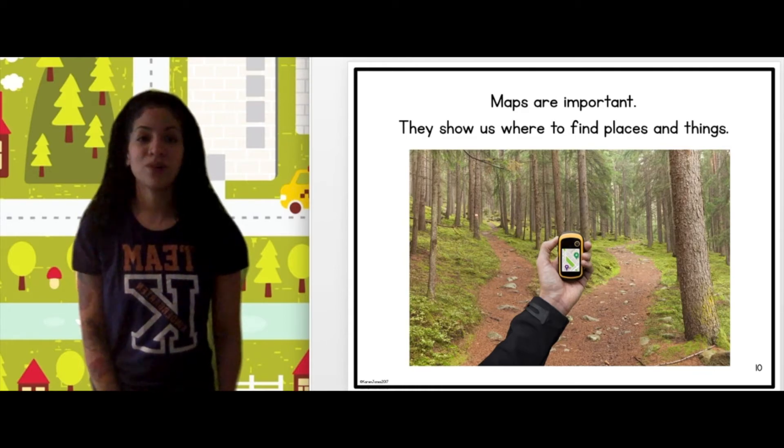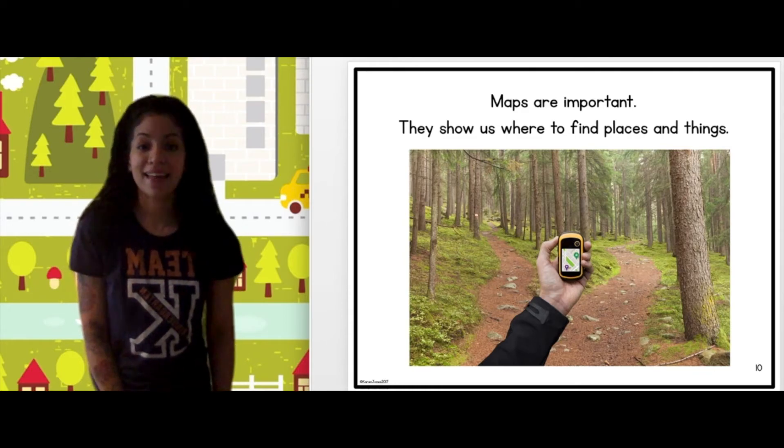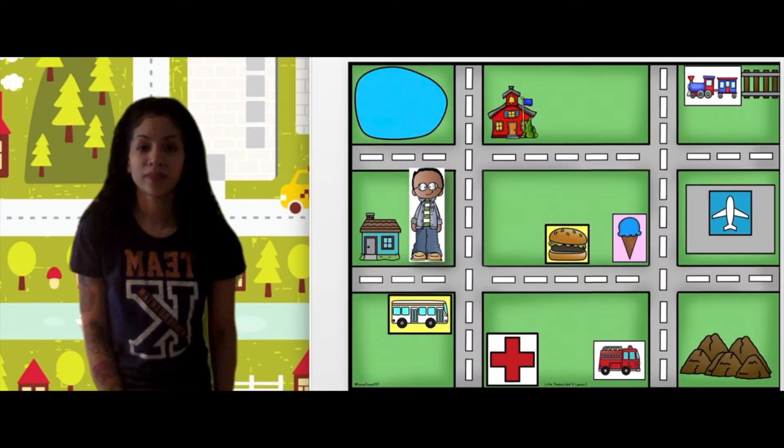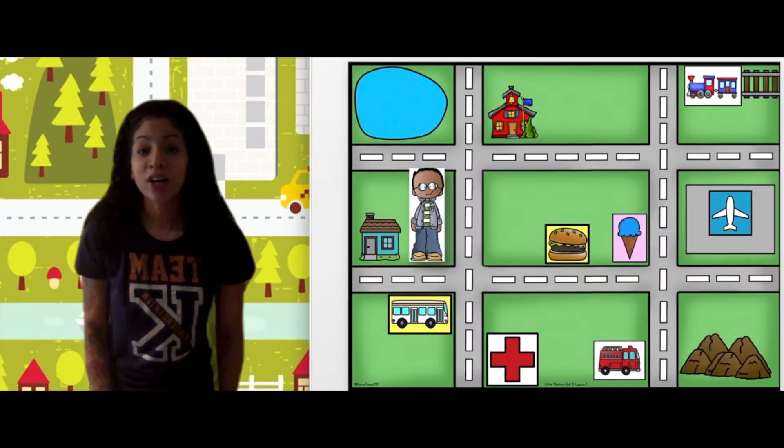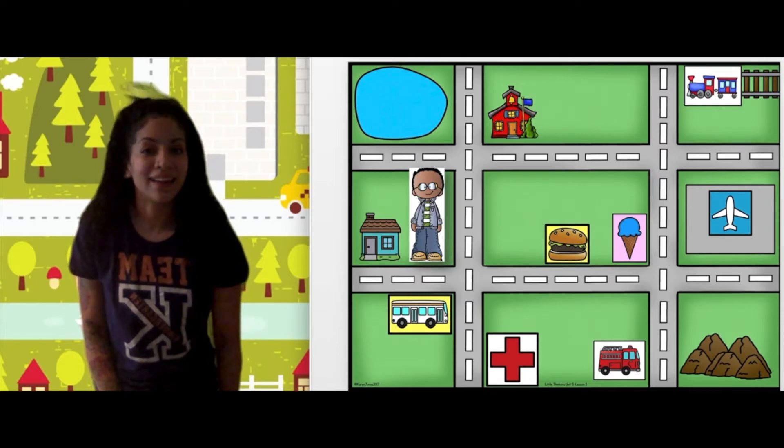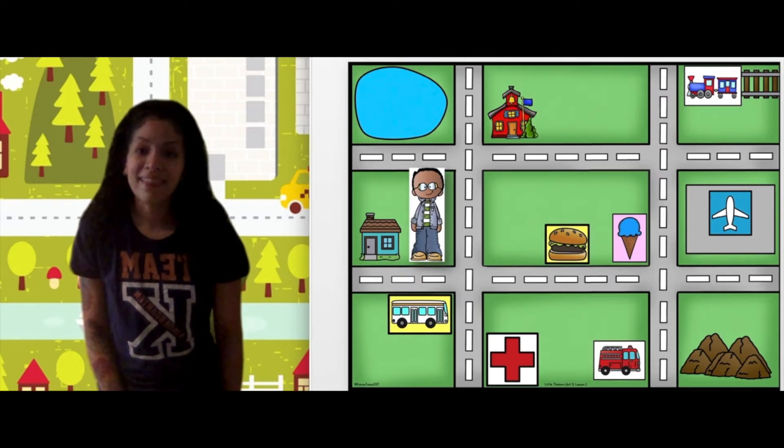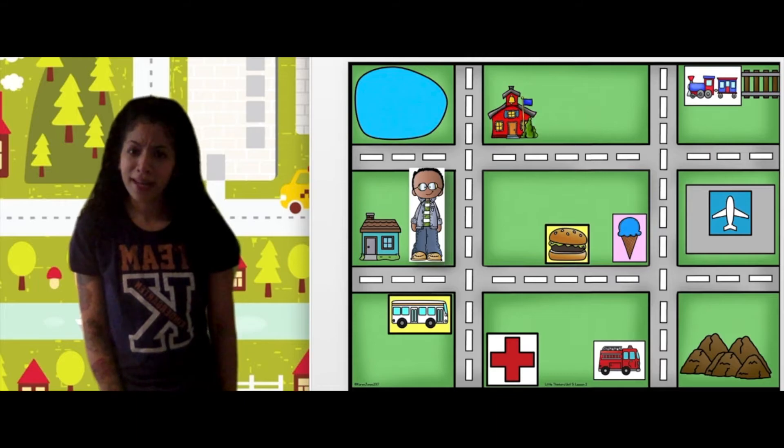Maps are important. They show us where to find places and things. Now, later, you're going to create your own map in writing workshop, and then you're going to write all about it. Awesome sauce.